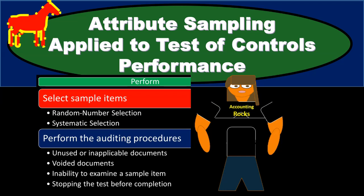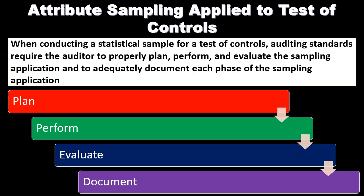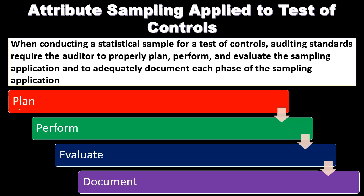In this presentation, we will take a look at attribute sampling applied to test of controls, focusing on performance. When conducting a standard sample for test of controls, auditing standards require the auditor to properly plan, perform, and evaluate the sampling application and to adequately document each phase. Those phases include plan, perform, evaluate, and document. We took a look at the plan last time.